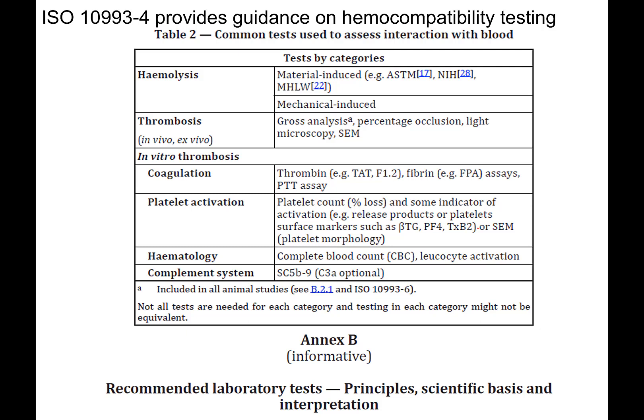As we think about these possible modes of failure, we need to build up a toolkit of testing methods to assess hemocompatibility. ISO 10993 is the broader set of biocompatibility testing standards from the International Standards Organization, and ISO 10993-4 specifically provides guidance on hemocompatibility testing. Table 2 from this standard lists common tests used to assess interaction with blood and hemocompatibility.